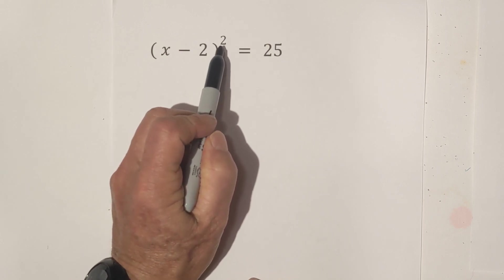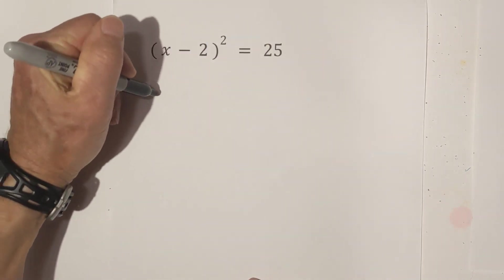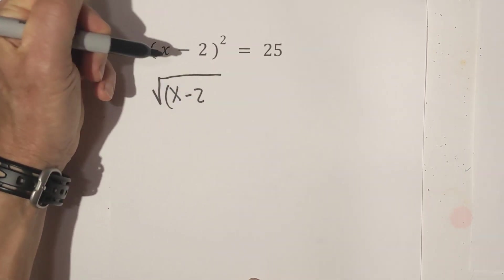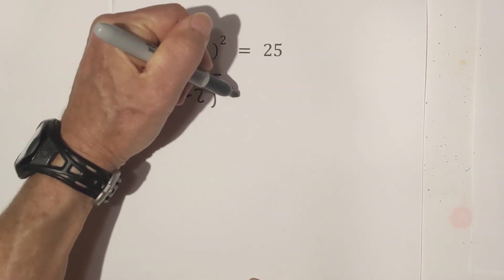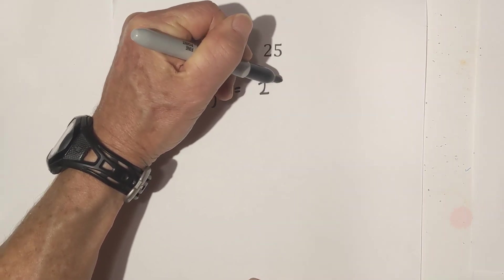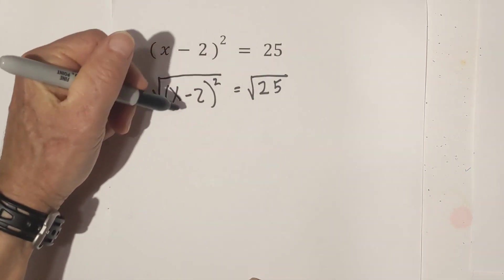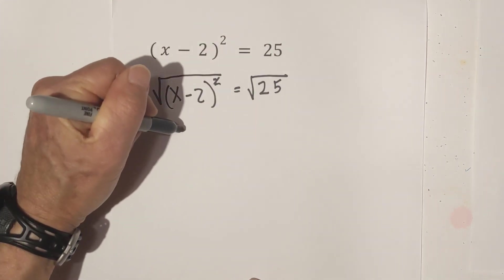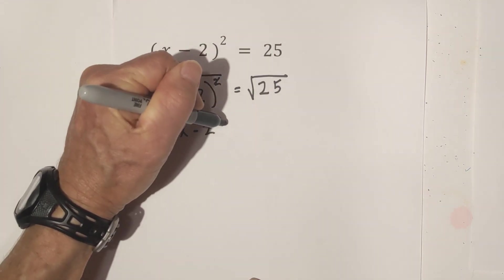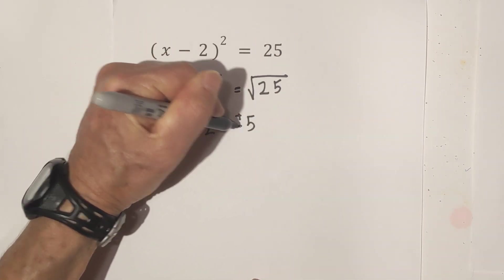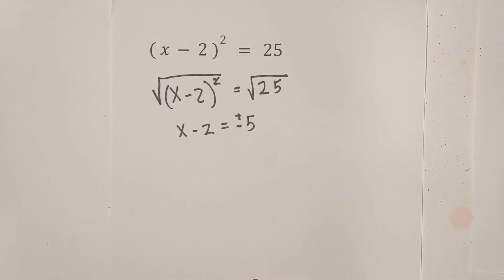First what we need to do is get rid of the square. In order to do that we are going to find the square root of both sides. And the square root of 25. So whenever we go with this, the square root will be x minus 2 equals, and I know the square root of 25 is 5. But it is plus or minus 5.